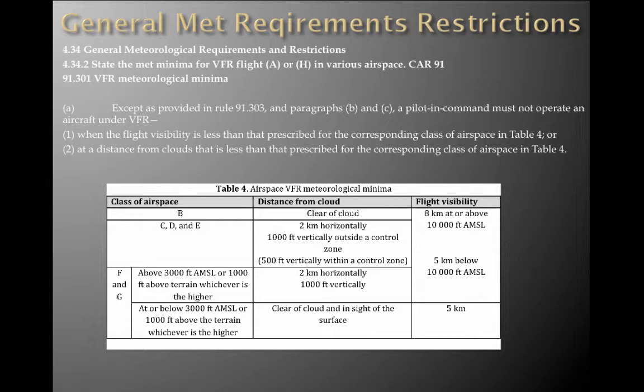It says: except as provided in Rule 91.303 and paragraphs B and C, a pilot in command must not operate an aircraft under VFR — one, when the flight visibility is less than that prescribed for the corresponding class of airspace in Table 4, or two, at a distance from clouds that is less than that prescribed for the corresponding class of airspace in Table 4. And you can find these met minimas in your AIP.